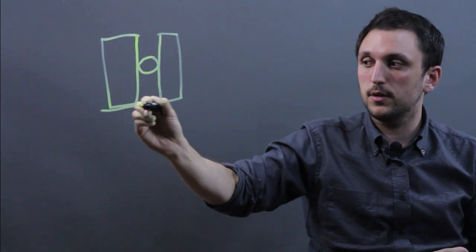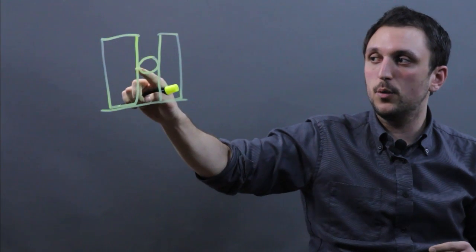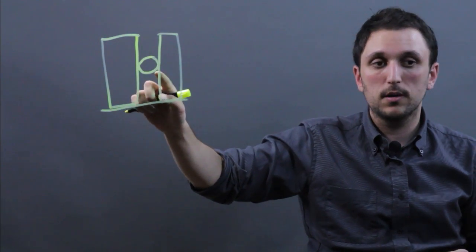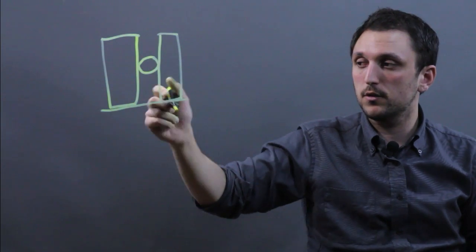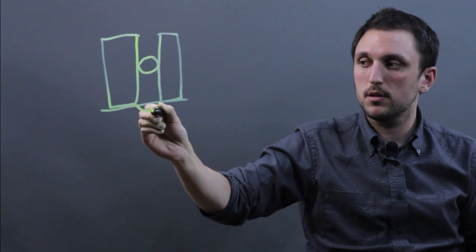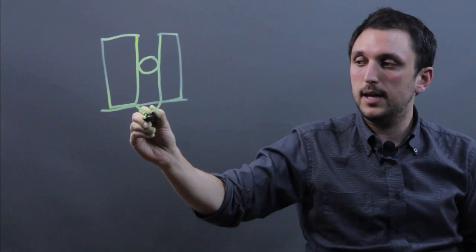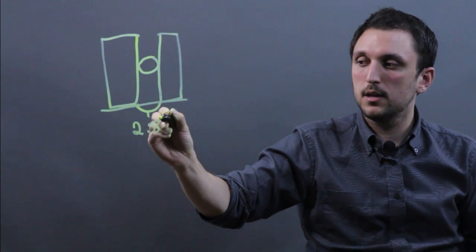Now make sure that this is a flat surface and that there's no indentation on either book. So once you have the marble wedged between two flat surfaces, you then measure the distance between this space and this space. And that, let's say it's 2.8 centimeters.